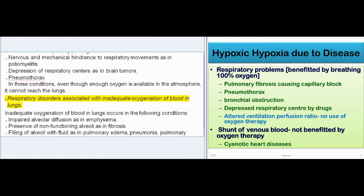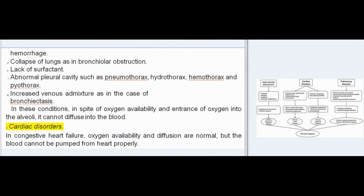Inadequate oxygenation of blood in lungs occurs in conditions such as impaired alveolar diffusion as in emphysema, presence of non-functioning alveoli as in fibrosis, filling of alveoli with fluid as in pulmonary edema, pneumonia, or pulmonary hemorrhage, collapse of lungs as in bronchiolar obstruction, lack of surfactant, abnormal pleural cavities such as pneumothorax, hydrothorax, hemothorax, and pyothorax, and increased venous admixture as in bronchiectasis. In these conditions, despite oxygen availability and entrance into the alveoli, it cannot diffuse into the blood.